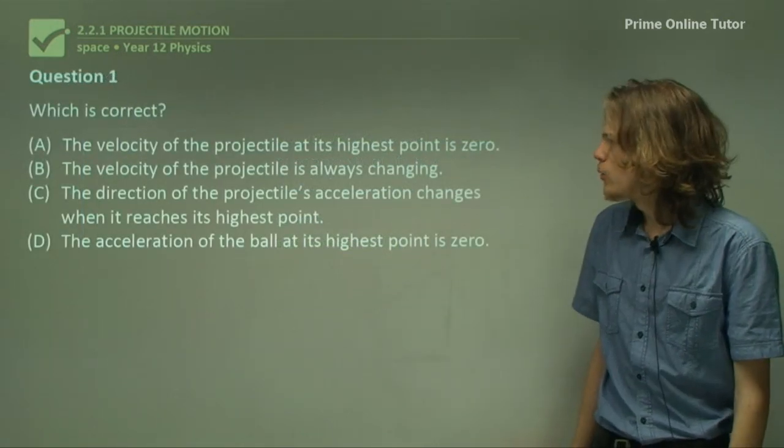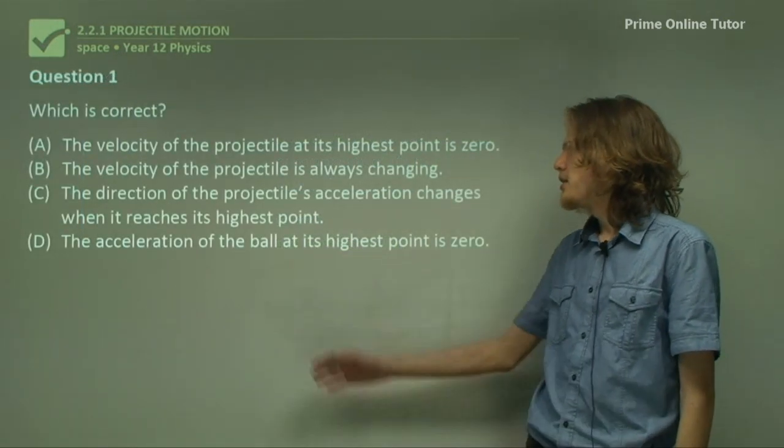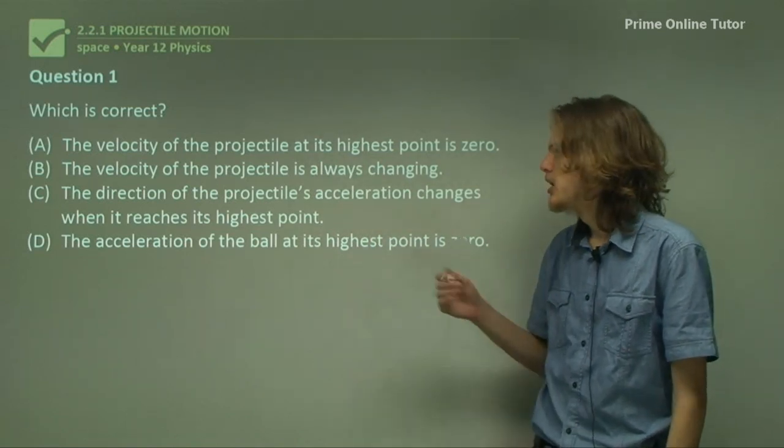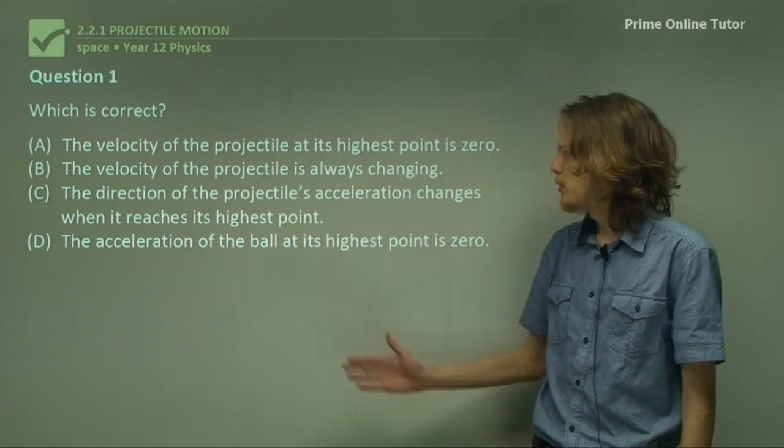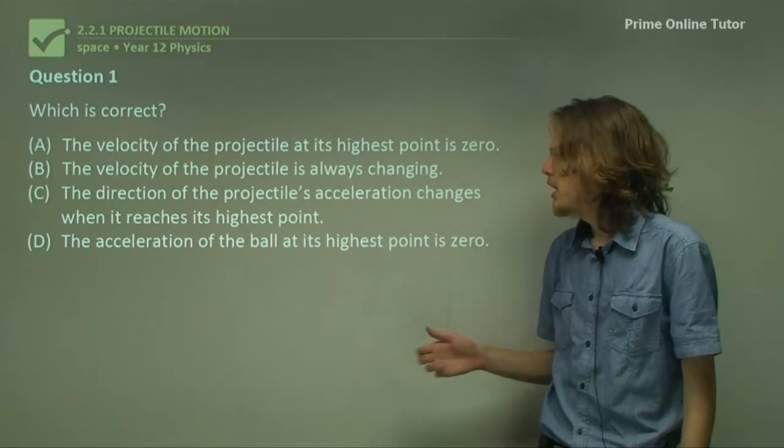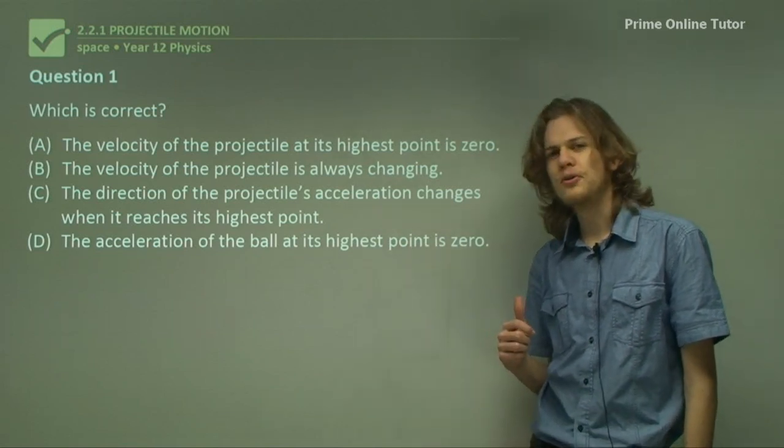Question 1. Which is correct? Either A: the velocity of the projectile at its highest point is 0, B: the velocity of the projectile is always changing, C: the direction of the projectile's acceleration changes when it reaches its highest point, or D: the acceleration of the ball at its highest point is 0.